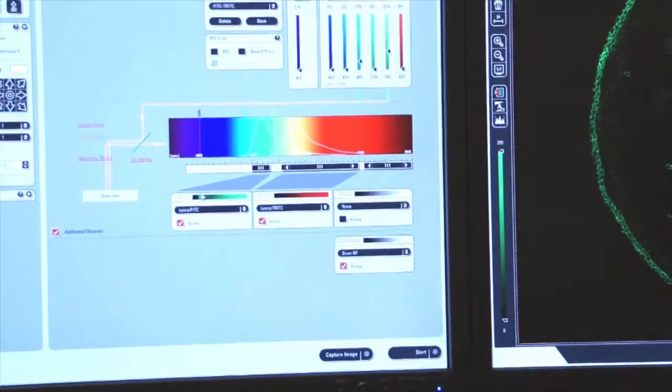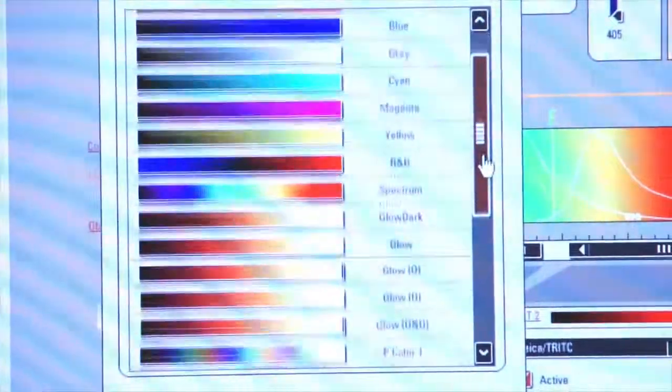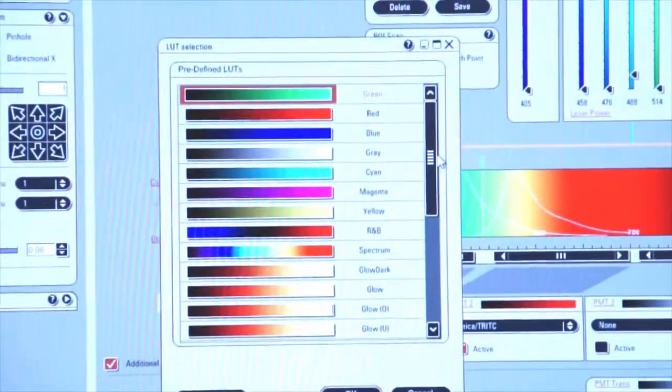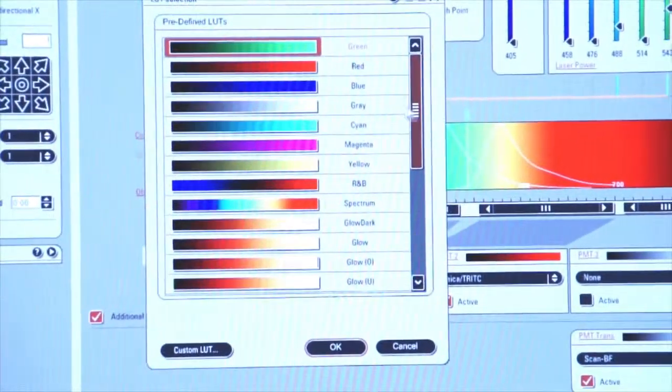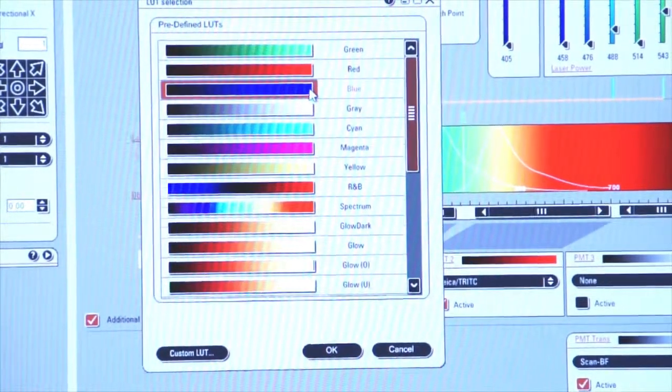And now if I click on this color band on PMT1, I can select the particular color that I'm interested in. I already have green. Let's select blue. And I click OK.